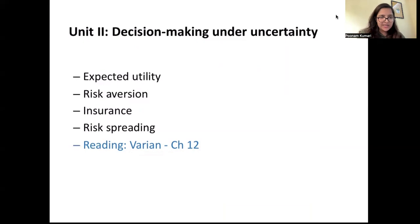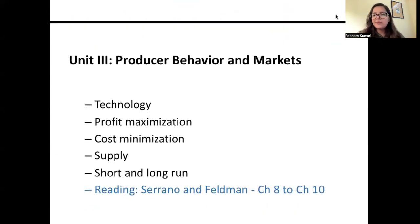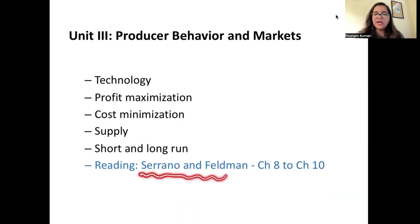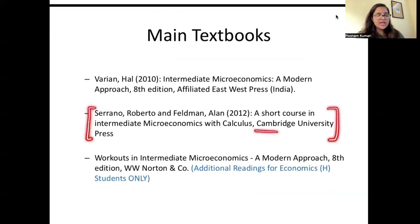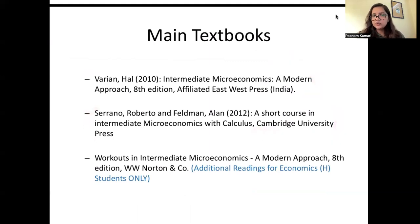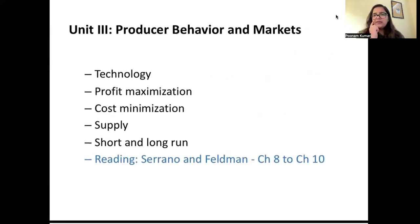The third unit is producer behavior in markets — how a producer thinks in a competitive setup, how profit maximization and cost minimization happen, how to determine the supply curve in the short run and long run. The readings for unit three will be Sereno and Feldman, chapters 8, 9, and 10. So the second textbook (Sereno and Feldman) is referred for unit three, and the Varian textbook for the first two units.